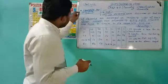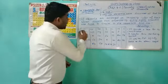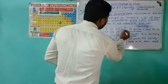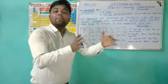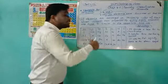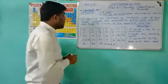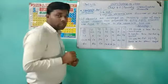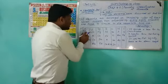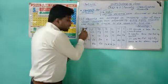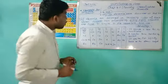His arrangement of elements looks like this: hydrogen, lithium, beryllium, boron, carbon, nitrogen, oxygen — just like music notes. Every eighth element starting from the first is similar to the first one. For example, if we start from fluorine as the first element, the 1st, 2nd, 3rd, 4th, 5th, 6th, 7th — and the eighth element has the same property as fluorine.